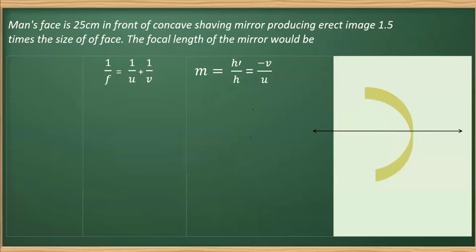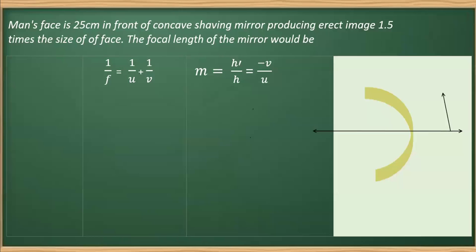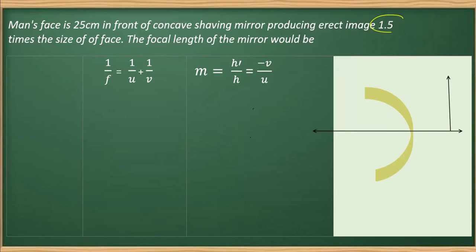Since it is used as a shaving mirror, definitely the image must be erect here. So the image is 1.5 times the size of the object. We have this information that the magnification is 1.5. We can write magnification which is 1.5, and we should write it as positive 1.5. It is an erect image. In case of erect, the magnification is taken as positive.